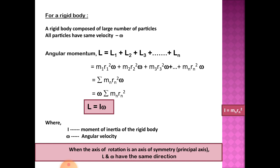Then you substitute the angular momentum of first particle, second particle, third particle up to nth particle. So first particle we have calculated as m1 r1 squared omega, second particle m2 r2 squared omega, third particle m3 r3 squared omega, and for the nth particle it will be mn rn squared omega.